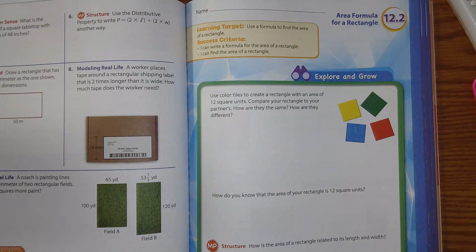It says use color tiles to create a rectangle with an area of 12 square units. Compare your rectangle with your partners. We do not have those square tiles, so I'm going to draw. What could I do if I wanted 12 square units? You could draw a big rectangle and then make little squares.